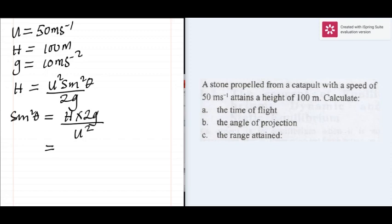Putting in the value, H is 100, 2g is 2 times 10, and u is 50. This will lead us to 0.8.